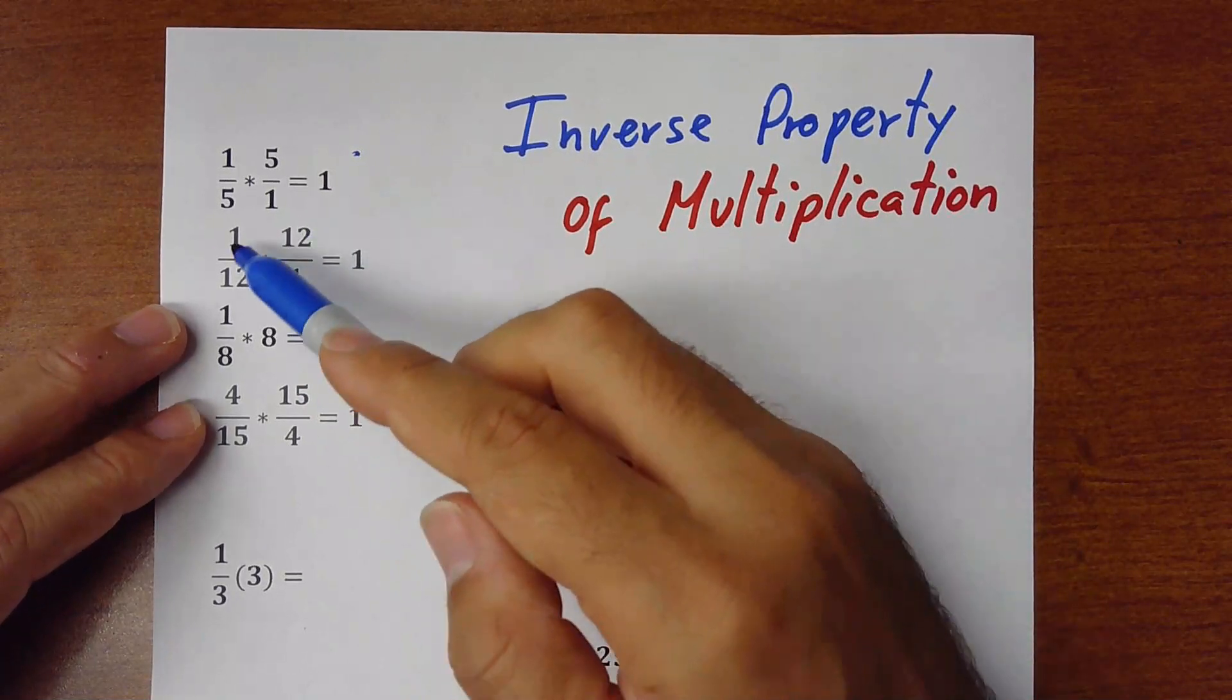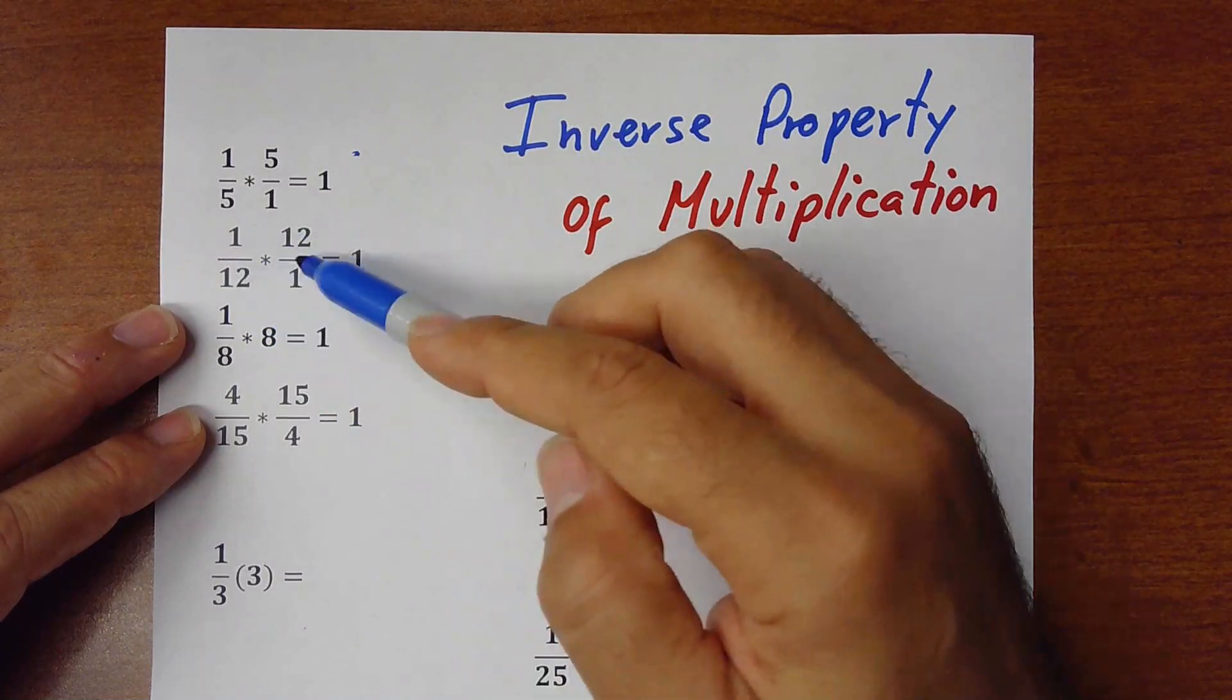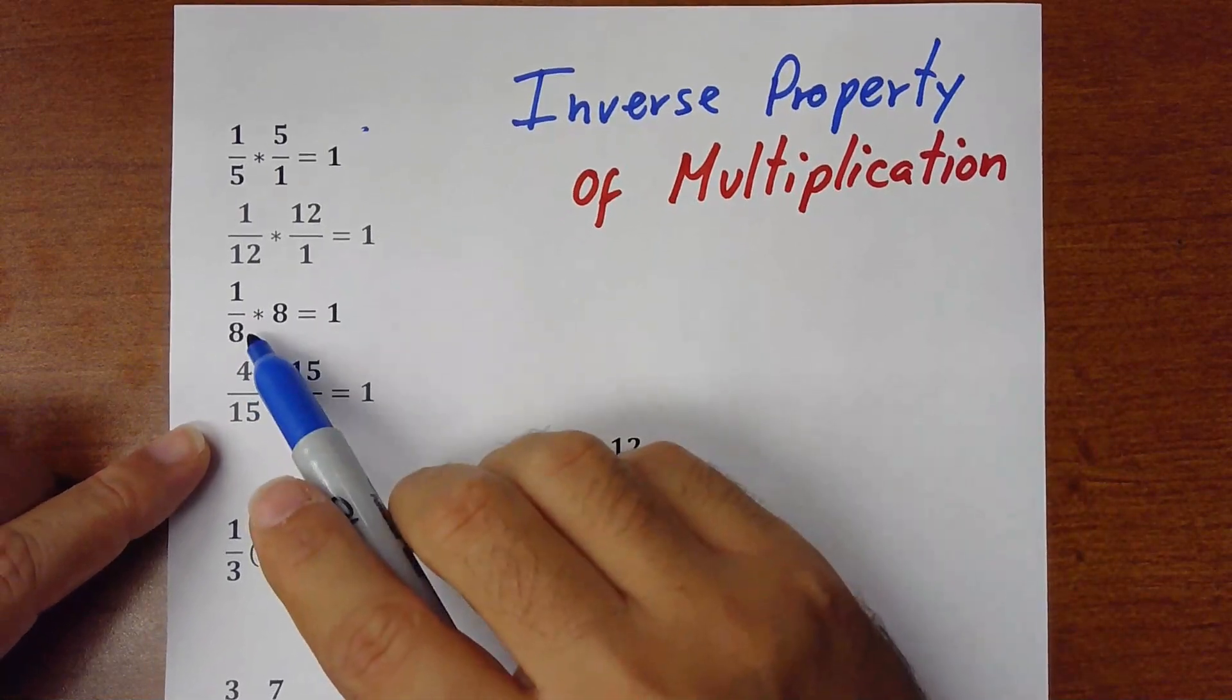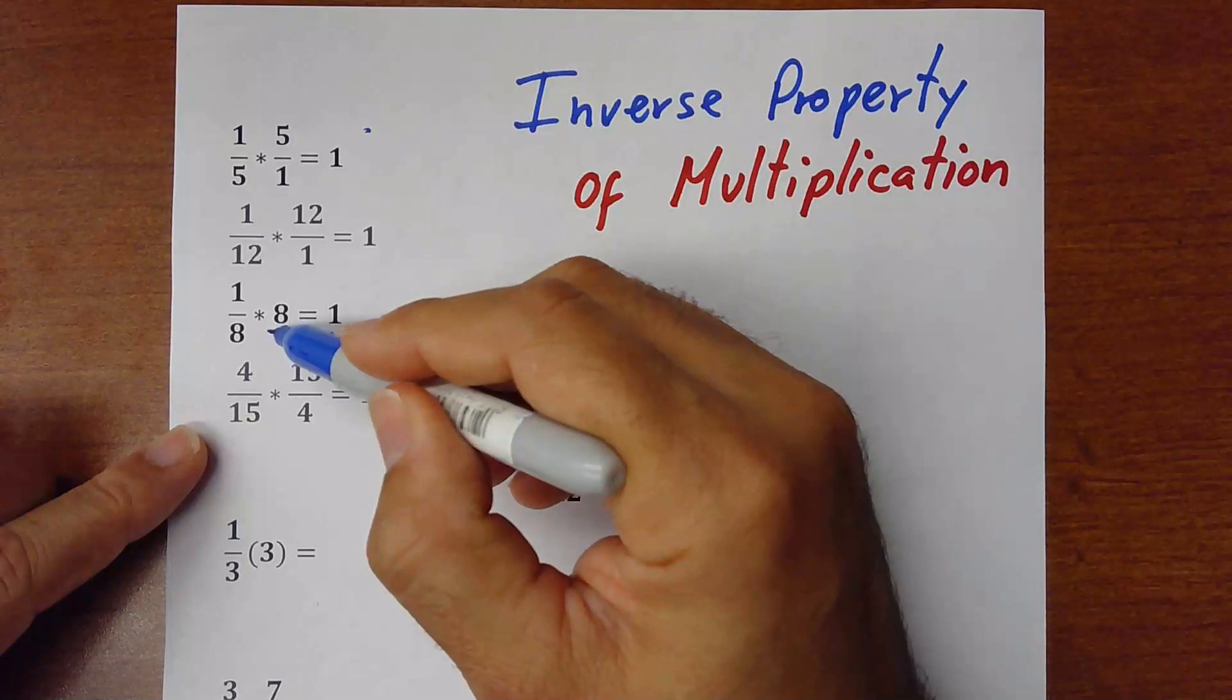So once you multiply any fraction by the flip of the same fraction, the answer would be 1. Also when you multiply, for example in this case you have 1 over 8 times 8. But this 8 is the same as 8 over 1.